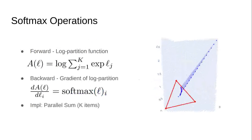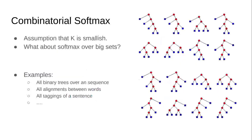To compute this function, we often just enumerate the sum. Luckily, this can be done very efficiently on modern hardware such as GPUs using parallel sum algorithms. This is fine as long as k is somewhat small — some value that we can enumerate. But if k gets extremely large, like in a combinatorial set, this becomes problematic.